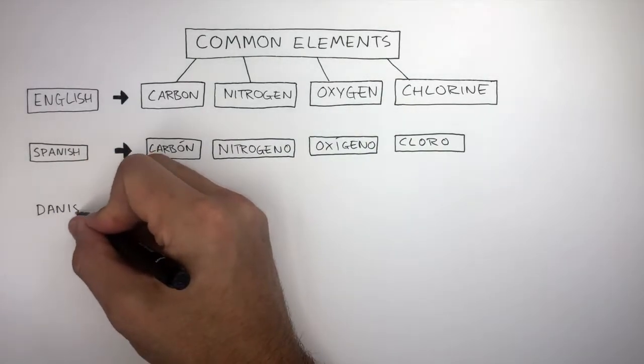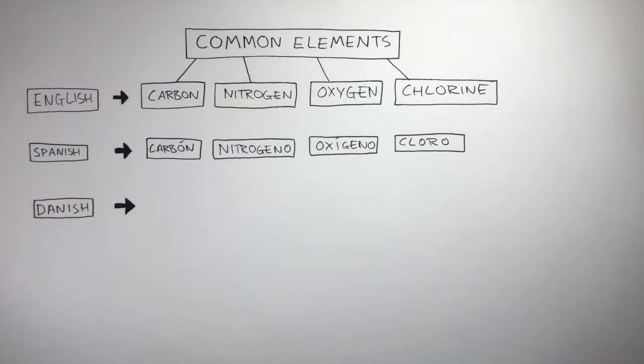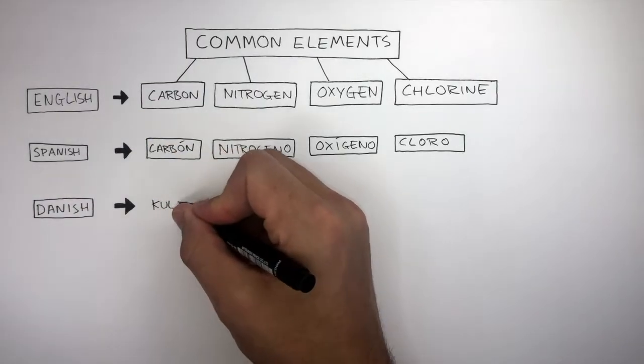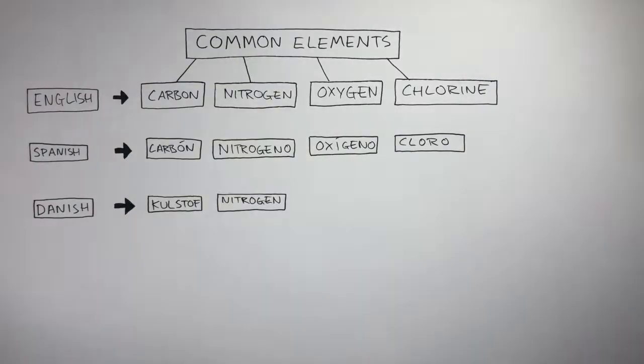What about in Danish? Well, in Danish, these elements are called Coolstuff, Nitrogen, Ilk and Chlor.